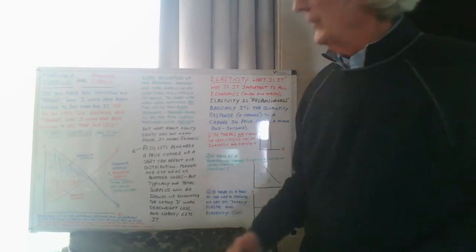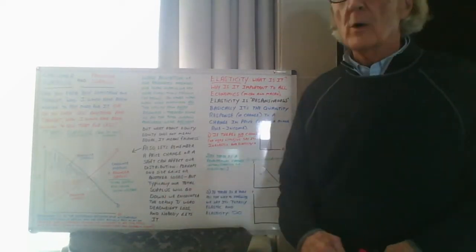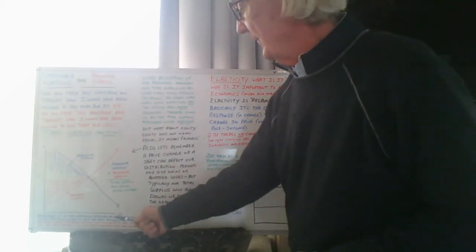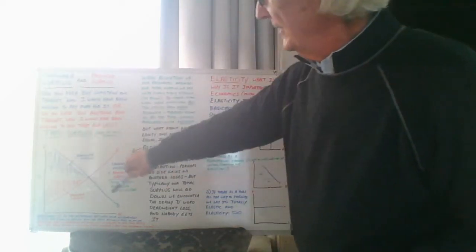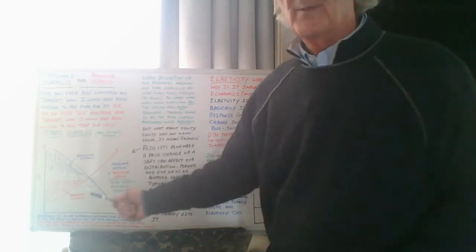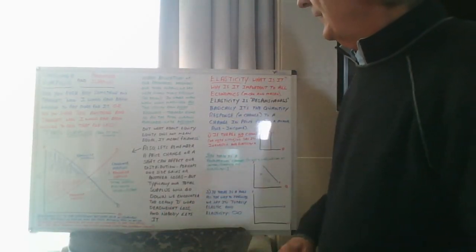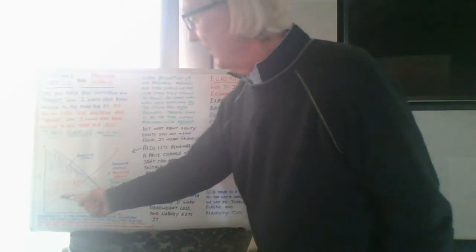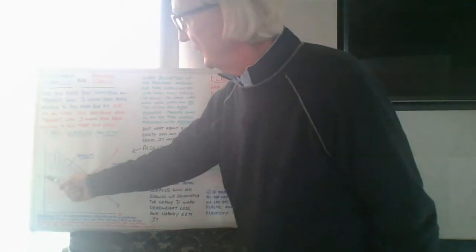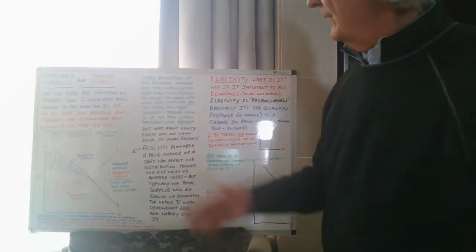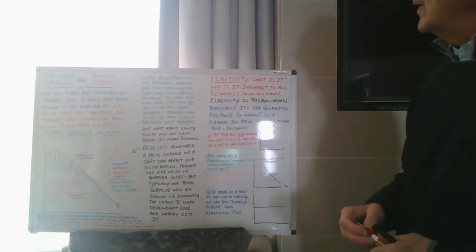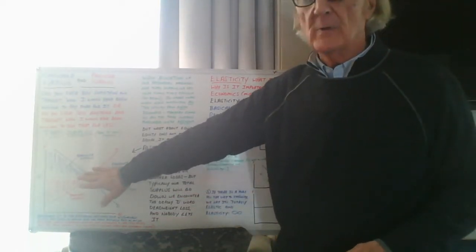When we add consumer surplus and producer surplus together, we get total surplus, or social welfare — and it's a good thing. Consumer surplus is specifically the difference between our willingness to pay, as illustrated by the demand curve, and the actual price established by the market. Producer surplus is the difference between our willingness to sell, illustrated by the supply curve, and what we actually sold it for, as established by the free market. When we allocate resources to maximize total surplus, we say we are totally efficient — representing the greatest amount of efficiency.